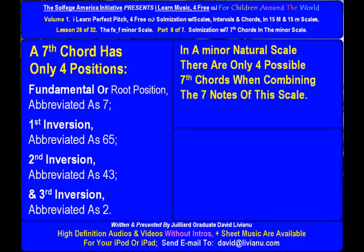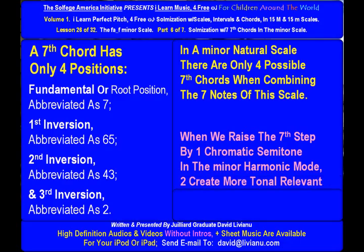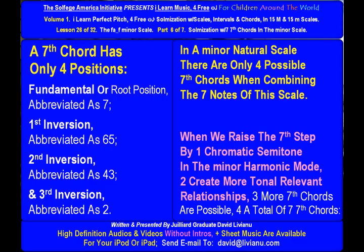In a minor natural scale, there are only four possible seventh chords when combining the seven notes of the scale. When we raise the seventh step by one chromatic semitone in the minor harmonic mode to create more tonal relevant relationships, three more seventh chords become possible, for a total of seven seventh chords.